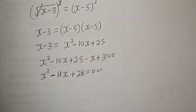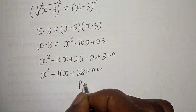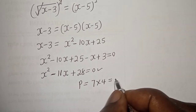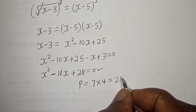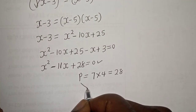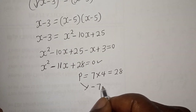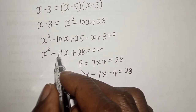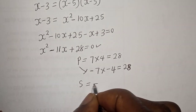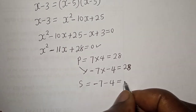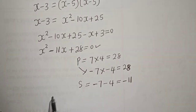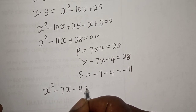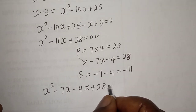Let's solve this using the factorization method. The product P is equal to 7 multiplied by 4, which equals 28. The product can also be written as minus 7 multiplied by minus 4, which is equal to 28. The sum is minus 7 minus 4, which equals minus 11. Now substituting: S squared minus 7S minus 4S plus 28 is equal to zero.